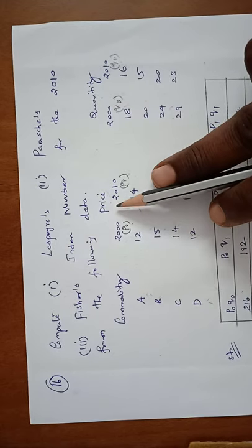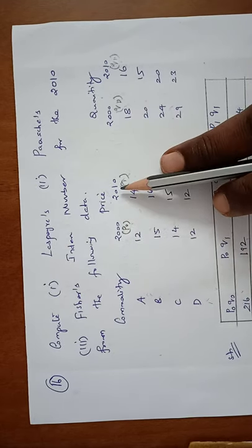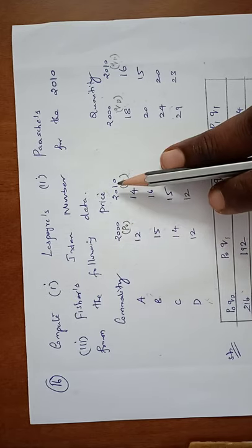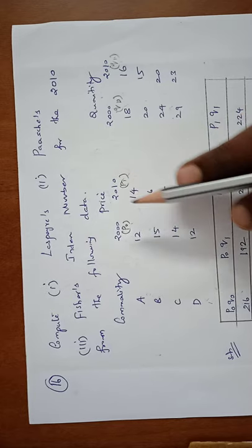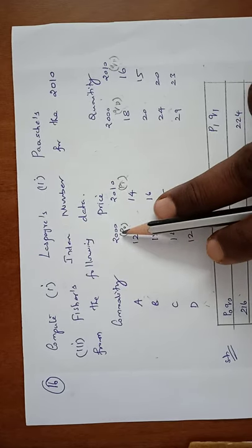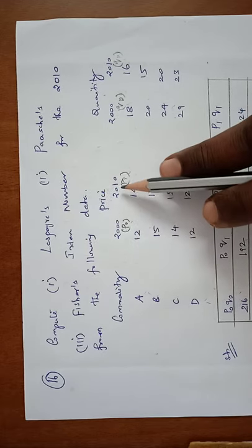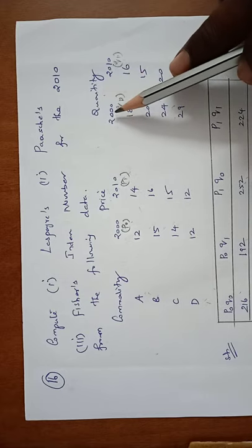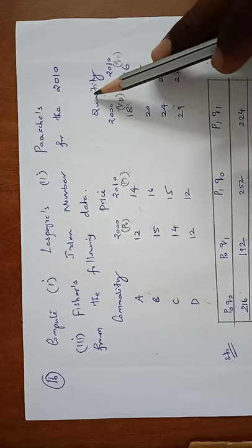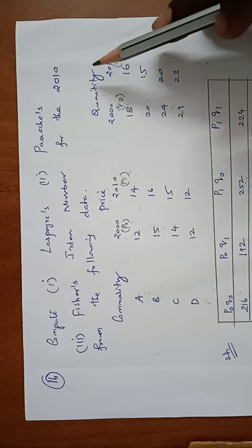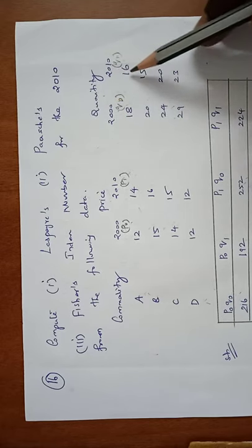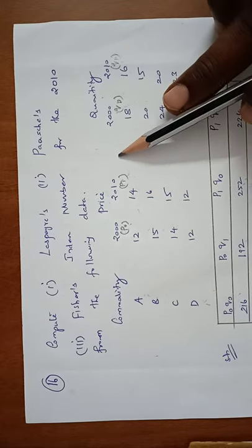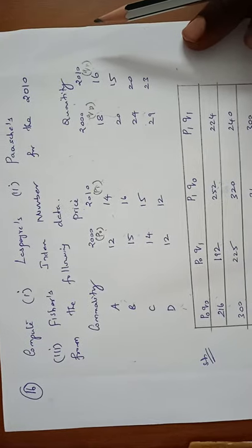The first year is 2000, next year is 2010. The first year is taken as base year and 2010 is current year. Base year price can be taken as P0 and current year price as P1. Base year quantity can be taken as Q0 and current year quantity as Q1. Generally, small p is taken as price and small q as quantity.